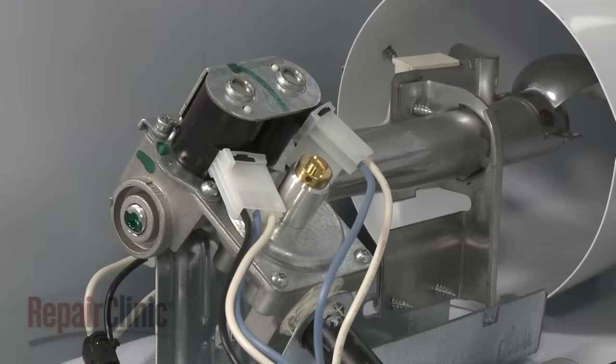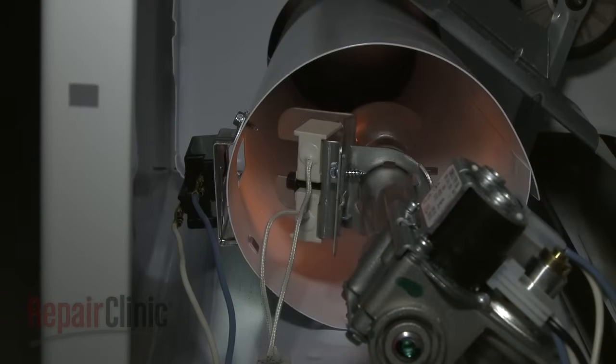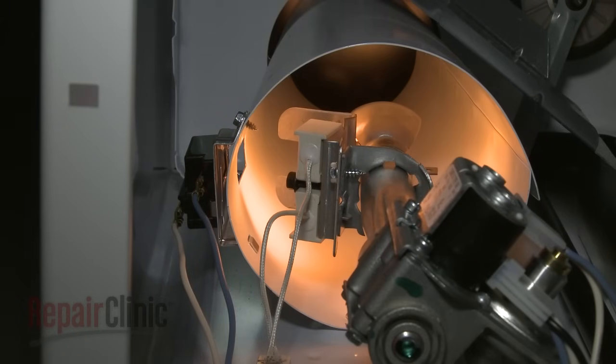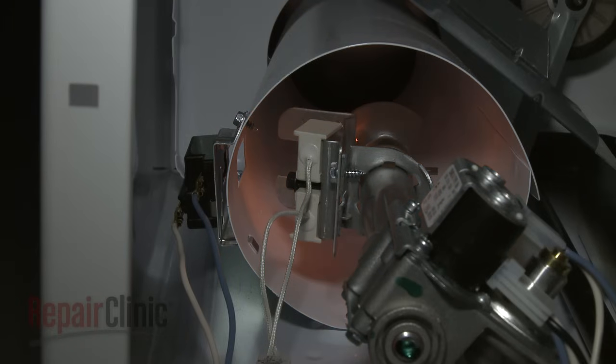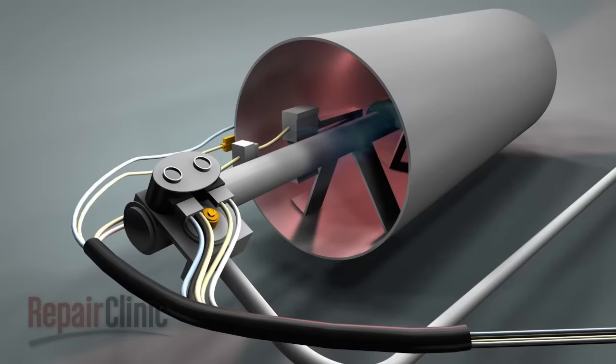The gas valve coils can also fail, but testing them can be inconclusive. If, at any time during the drying process, you observe the igniter glowing and shutting off without establishing a flame, then one or more of the gas valve coils are probably defective and will need to be replaced. Keep in mind, the coils can fail several minutes into the drying cycle, which will result in the dryer taking too long to dry.